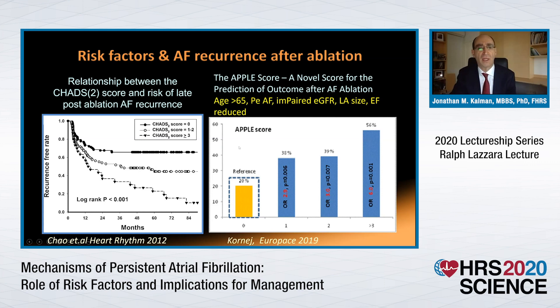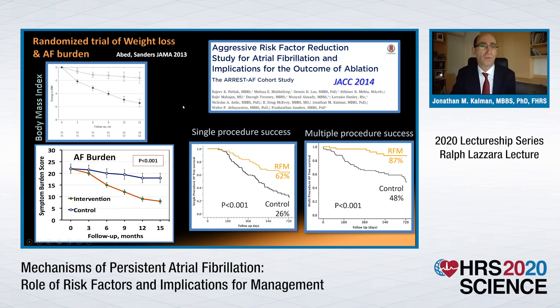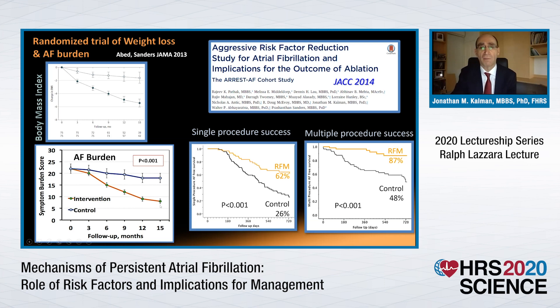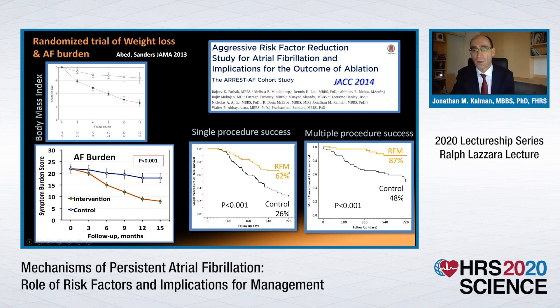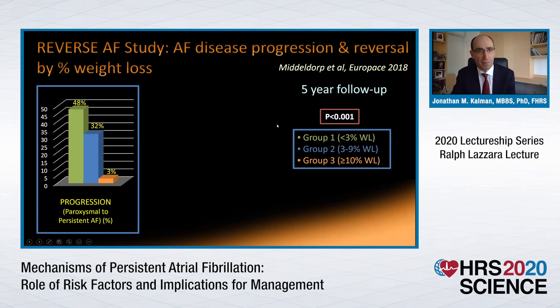What evidence is there that treating these factors can reverse the remodelling process? The seminal work of my colleague Prash Sanders has indicated that treating weight and risk factors has significant impact on outcomes. A randomised study in AF patients undergoing weight loss in a dedicated clinic showed significant fall in body mass index, correlating with a very significant reduction in AF burden over a 15-month follow-up. The ARREST AF cohort study looked at obese patients — BMI over 30 — treated for the full array of risk factors. Single and multiple procedure success rates were significantly better than in the control arm.